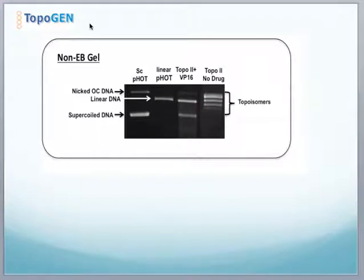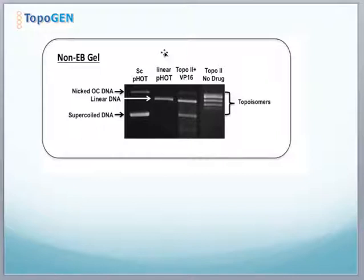When you run these reactions, you'll either do a non-EB gel or an ethidium bromide gel. I want to show you what a typical non-EB gel result looks like. Shown are some different species of DNA in the reaction products. These are standard 1% agarose gels with no intercalator in the gel or running buffer. Supercoiled DNA typically appears as a supercoil DNA substrate with a small amount of nicked open circular DNA. There is no linear DNA in the substrate.